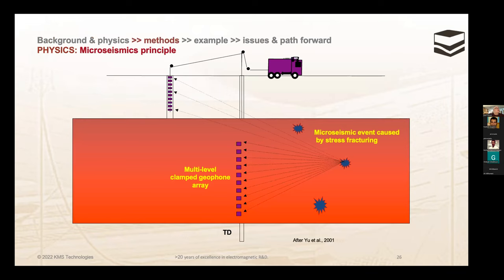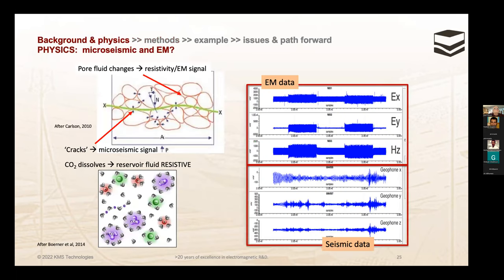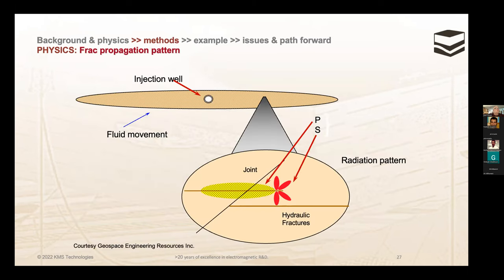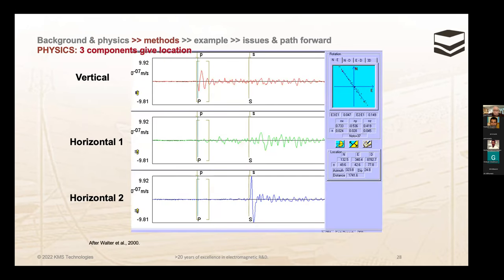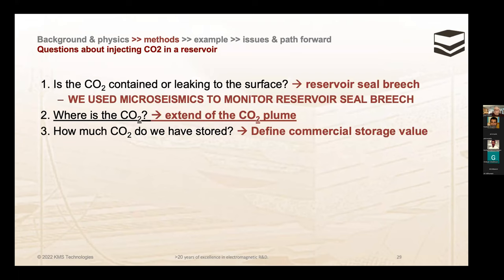In most cases we observe a resistivity signature before we see a microseismic signature. In a microseismic case, a crack in reservoir rock is monitored by receivers in several boreholes, which define where the crack occurs and map it. The crack usually gives a P and S wave, and you map using the P and S wave hodogram — the distance obtained from the difference between P and S wave velocity. We use microseismic to find the reservoir seal and EM for the plume and the value part.